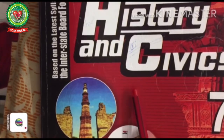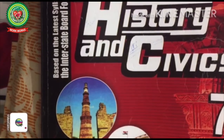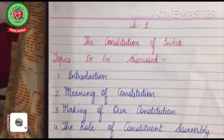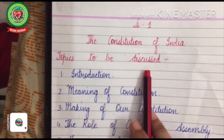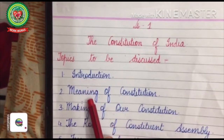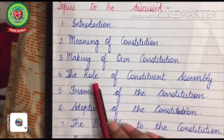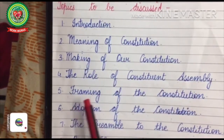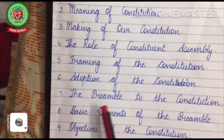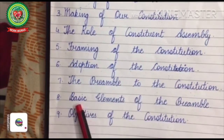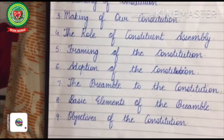Good morning students. Take out your history and civics book of class 7th. We are going to start with the new lesson — Civics, Lesson Number One: The Constitution of India. The topics we will discuss in this lesson are: its introduction, meaning of Constitution, making of our Constitution, the role of Constituent Assembly, framing of the Constitution, adoption of the Constitution, the Preamble, basic elements of the Preamble, and objectives of the Constitution.